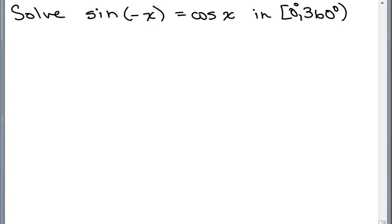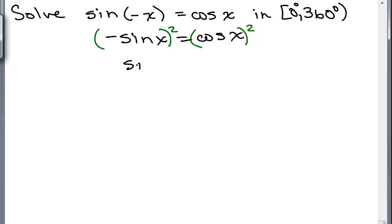I solved this trig equation in another video, and now I'm going to do it again using a different method. We begin the same. We want to rewrite sine of negative x as negative sine of x since that's an identity equals cosine of x, and we're going to square both sides. Now remember, when you square both sides, you might get extraneous roots, so it's extremely important to check all the solutions. So I get sine squared x equals cosine squared x.